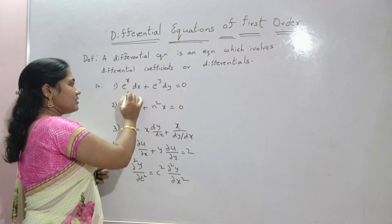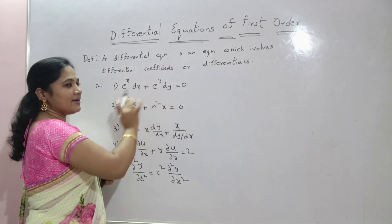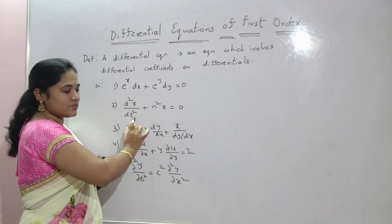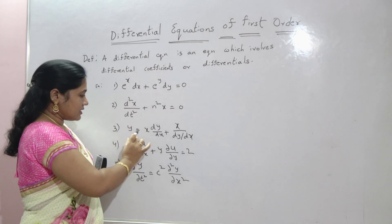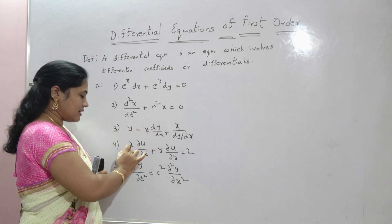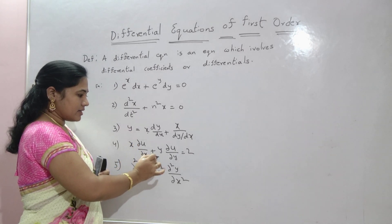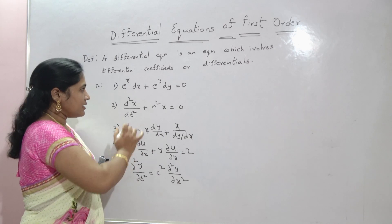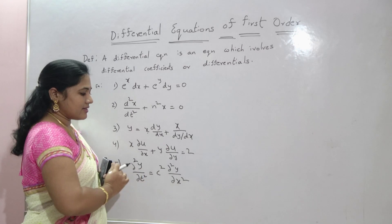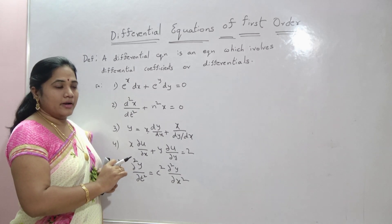If you observe the first equation, there are two variables: x and y. In the second equation, x and t are the variables. In the third equation, y and x are the variables. In any equation, one variable is dependent and another is independent.